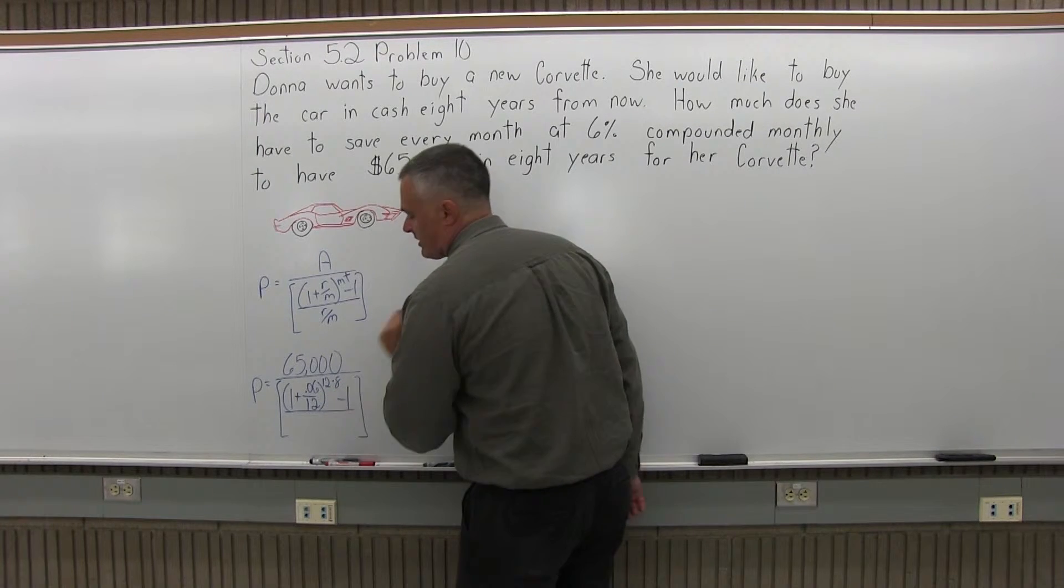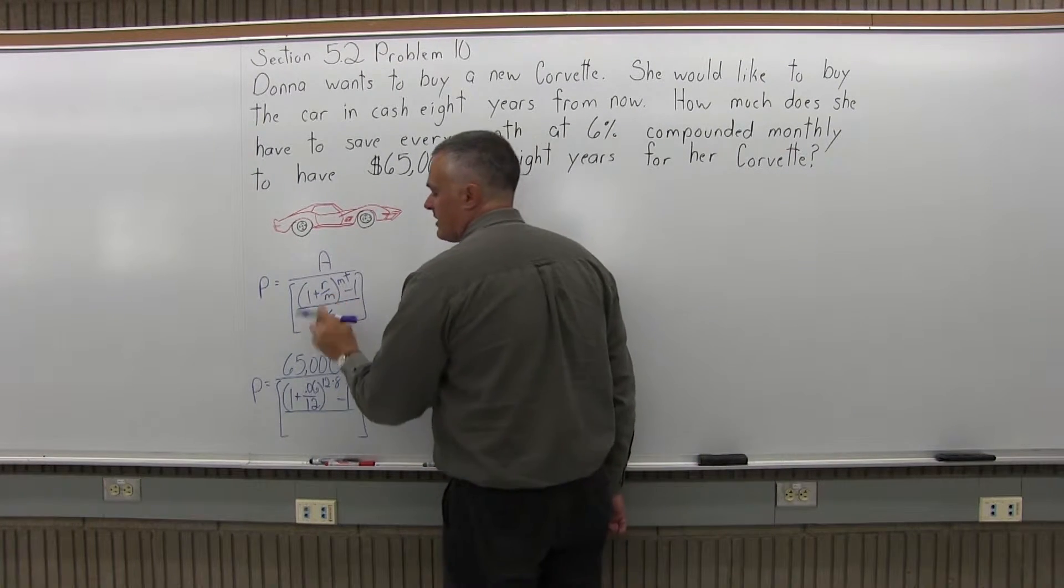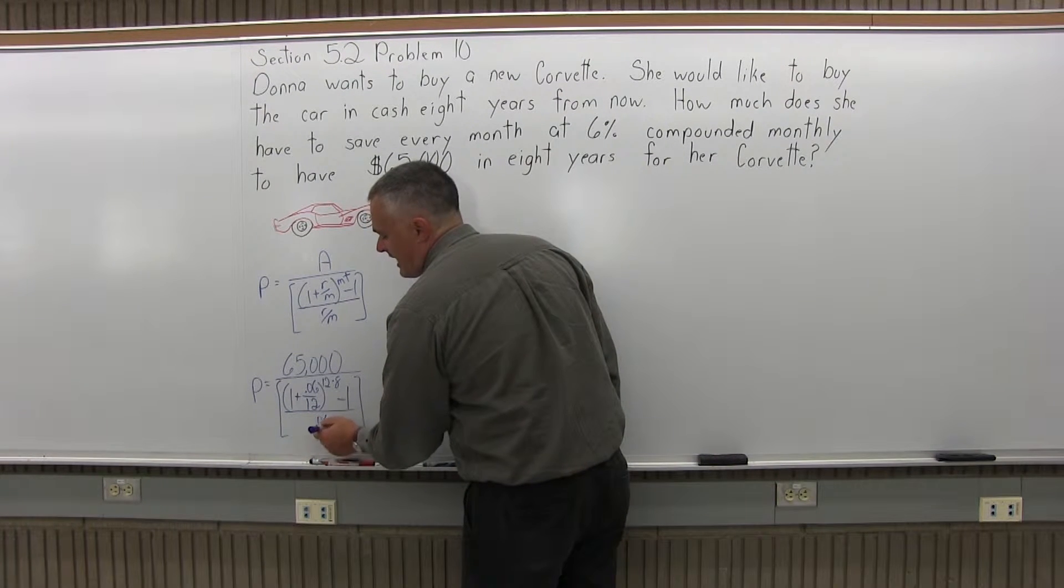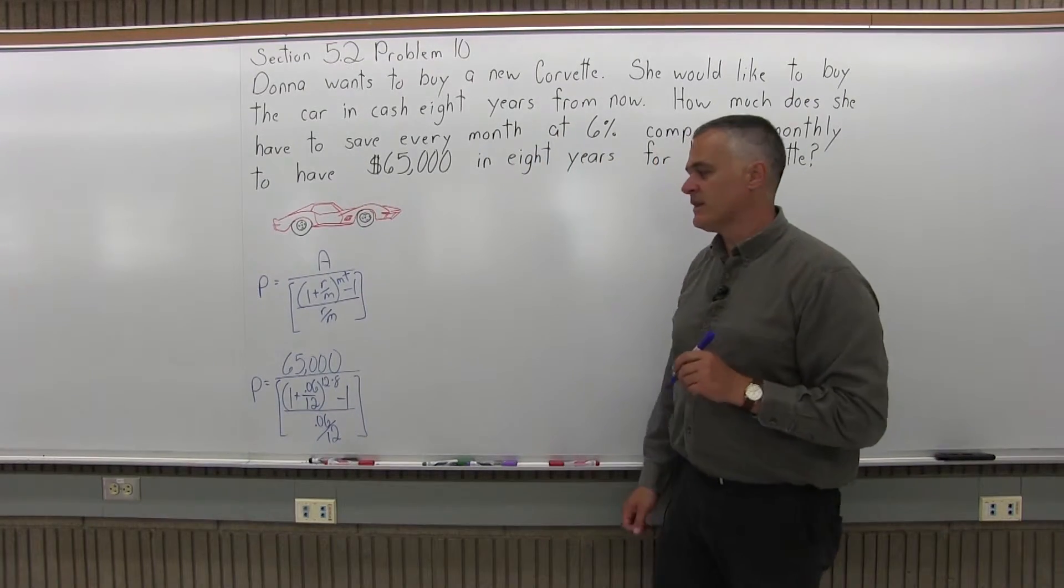And after the parentheses there's a minus 1. In the denominator of the brackets there's R/M. Again, the R, the rate as a decimal for this problem is 0.06, and the M, the type of compounding for this problem is 12, we have monthly.